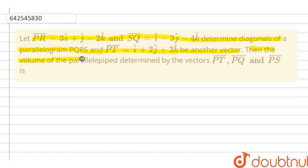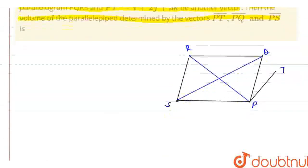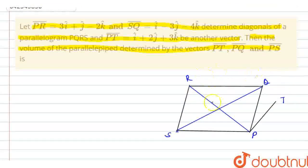The volume of the parallelepiped determined by the vectors PT, PQ and PS. I am drawing the diagram. PQRS is the parallelogram and PT is another vector. We have to find the volume of the parallelepiped determined by the vectors PT, PQ and PS.